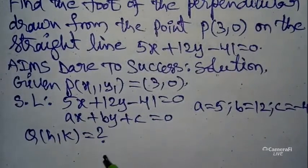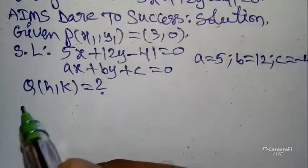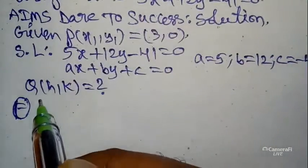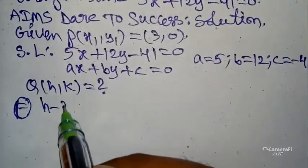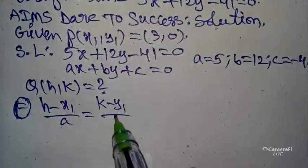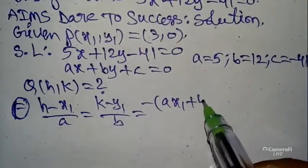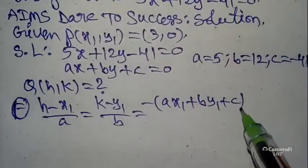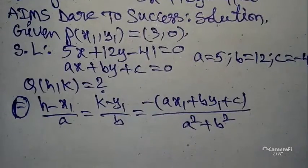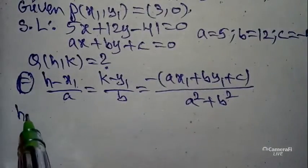After getting these values, we can find Q(h, k) — the perpendicular foot. The foot of the perpendicular formula is: (h − x₁)/a = (k − y₁)/b = −(ax₁ + by₁ + c) / (a² + b²).